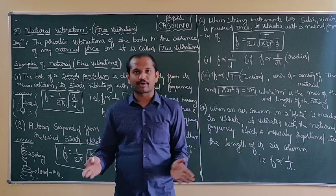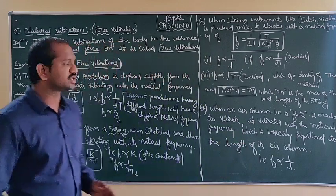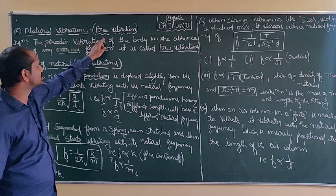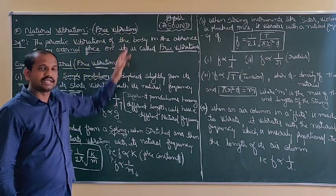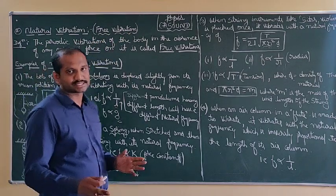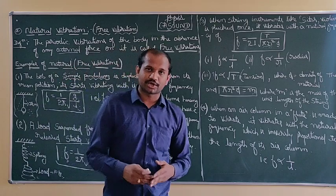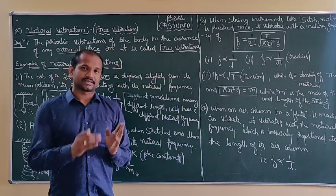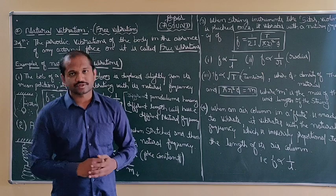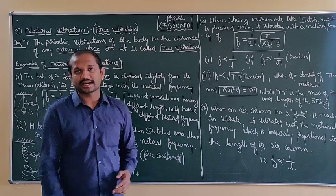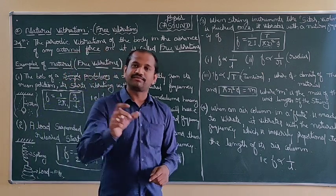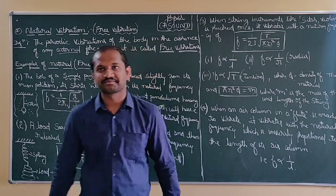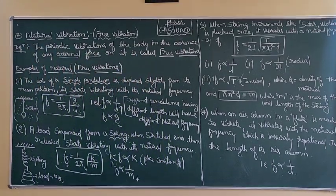The fourth example is the flute. A very good music can be produced by a flute — it has a number of holes. When an air column in a flute is made to vibrate, it vibrates with a natural frequency which is inversely proportional to the length of its air column. These are the four very important examples from the examination point of view for natural vibrations or free vibrations. In the next video we will see what you mean by resonance, which is a special case of forced vibrations. Thank you.